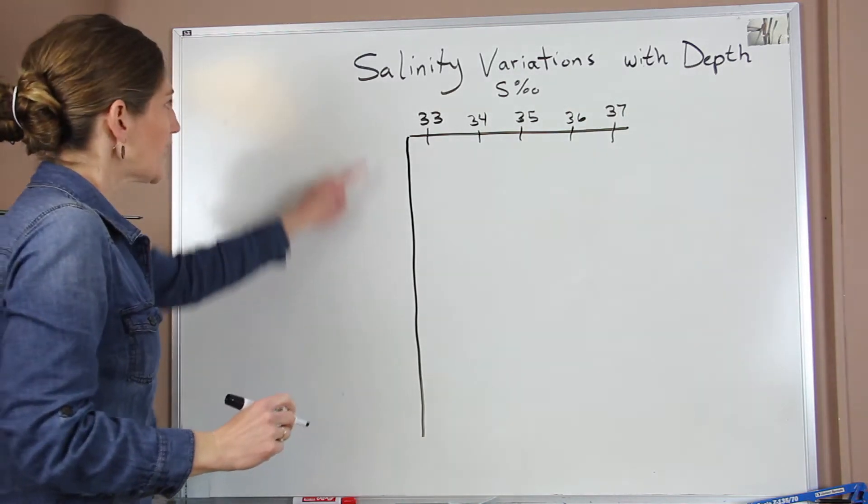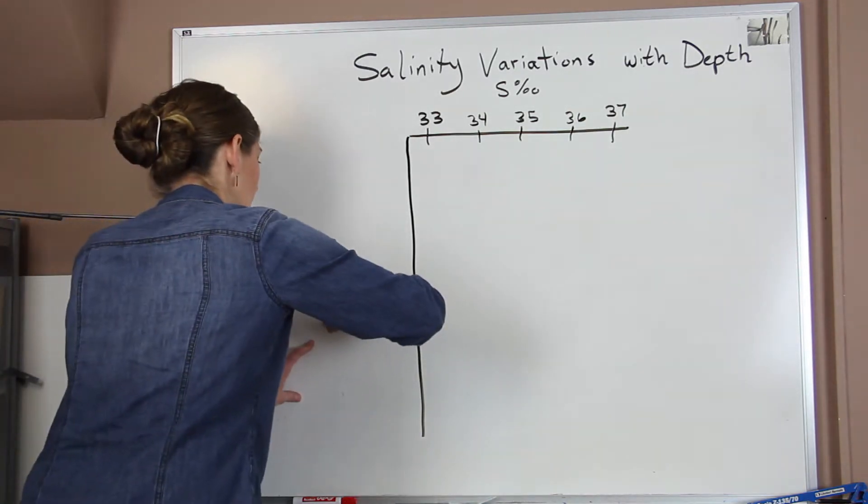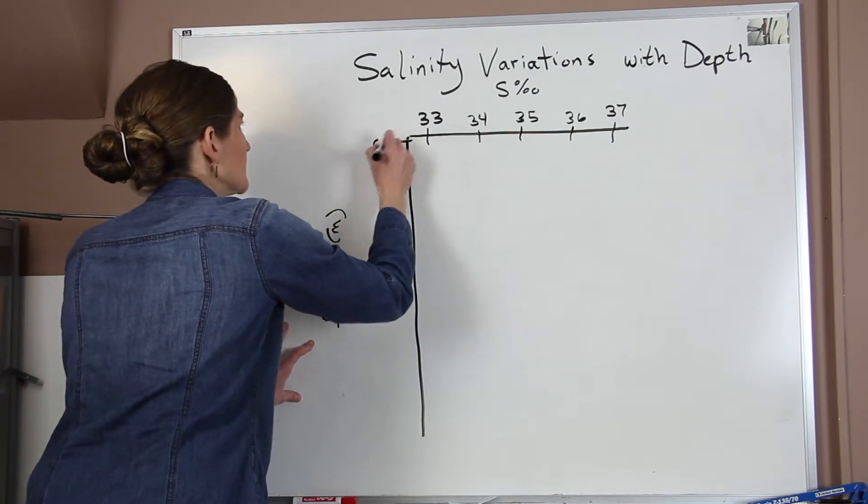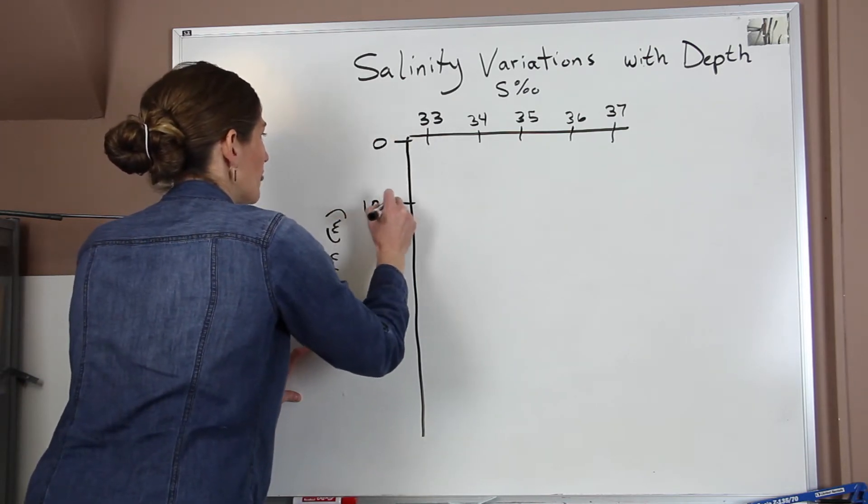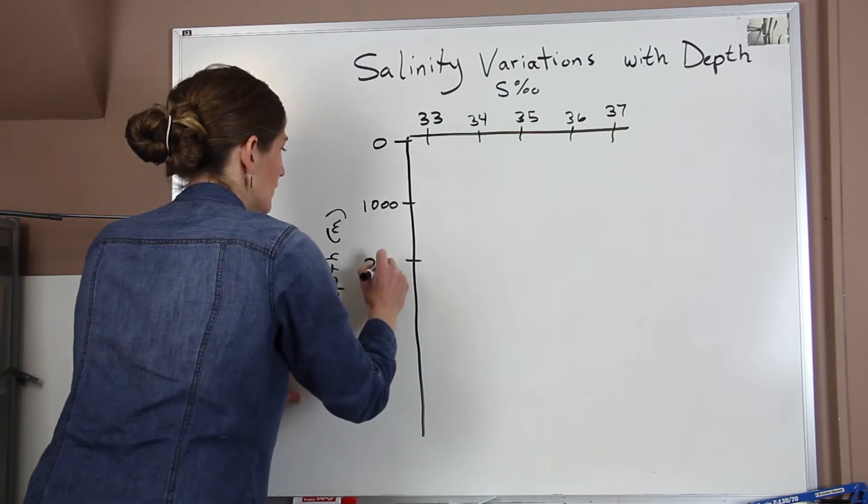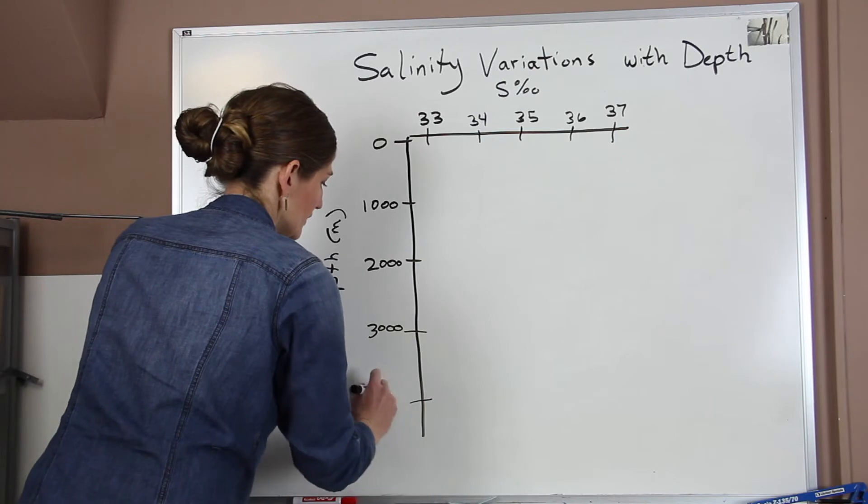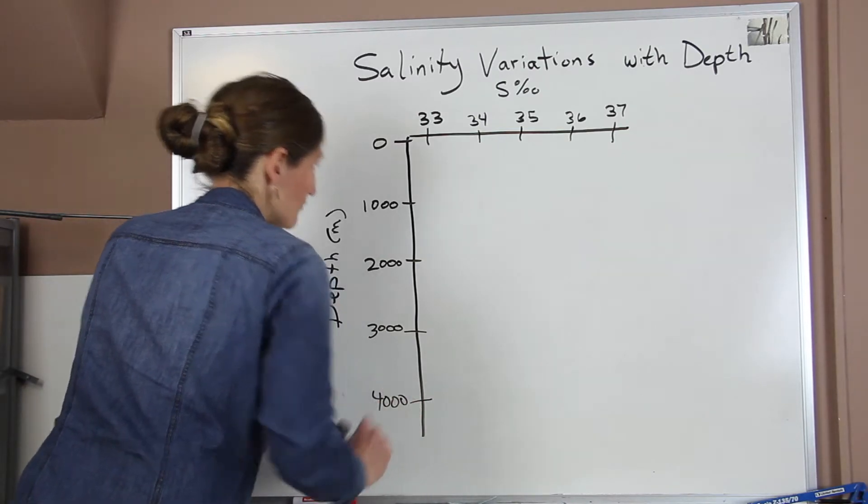And on our vertical axis, we're going to have our depth. And it will be in meters. And we're going to go from zero, 1000, 2000, 3000, and 4000.